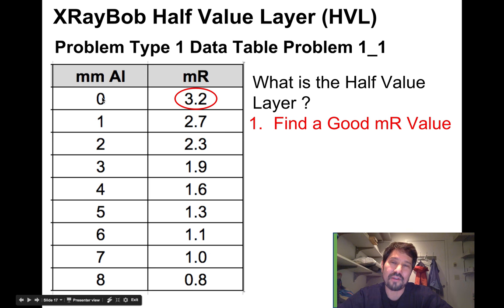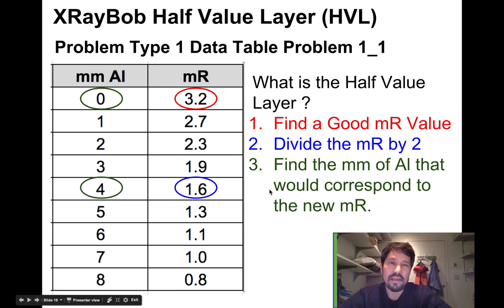You'd first find a good MR value, and I would pick either zero or one, something high. I would cut it in half. So 3.2 divided by 2 is 1.6, and I would see that at 1.6, when I went through four millimeters of aluminum, I cut the intensity to 1.6.